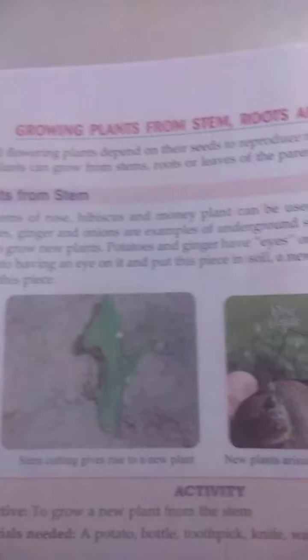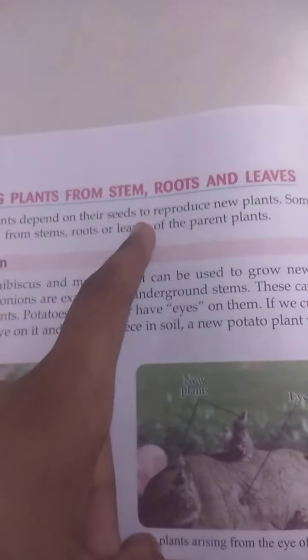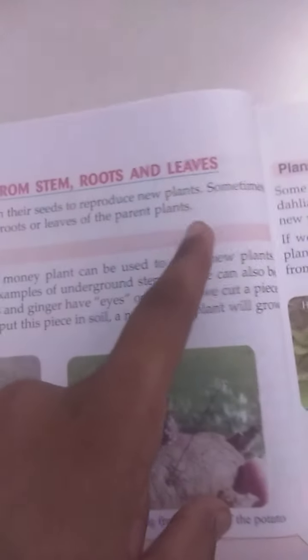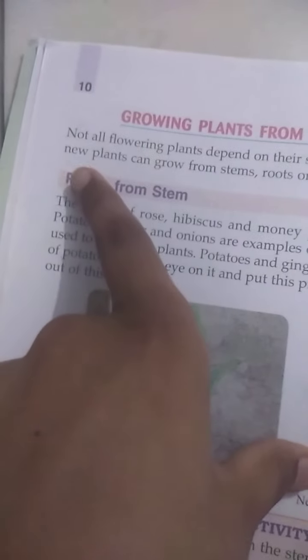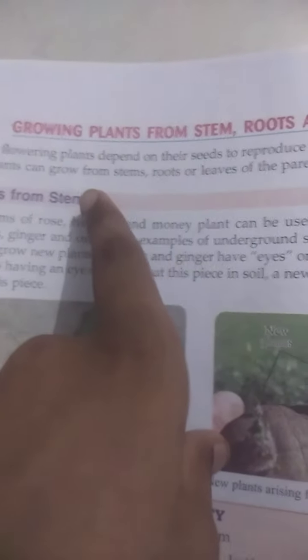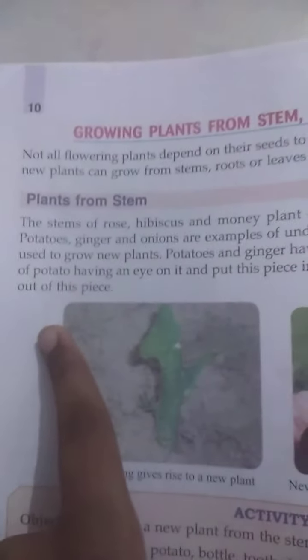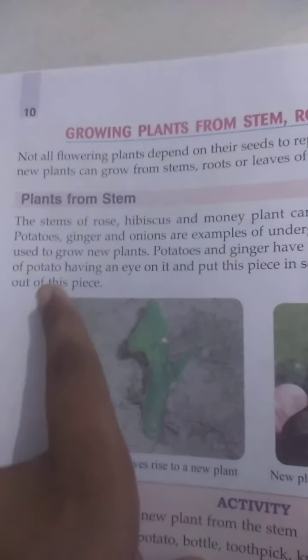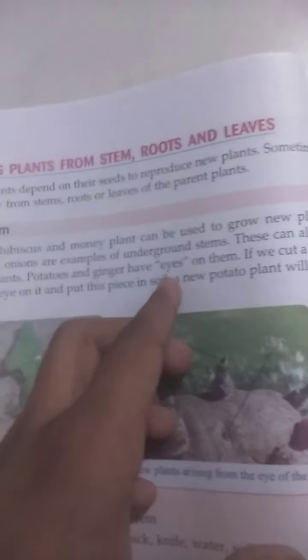Growing plants from stems, roots, and leaves: not all flowering plants depend on their seeds to reproduce new plants. New plants can also grow from stems, roots, and leaves. The stems of rose are an easy example.